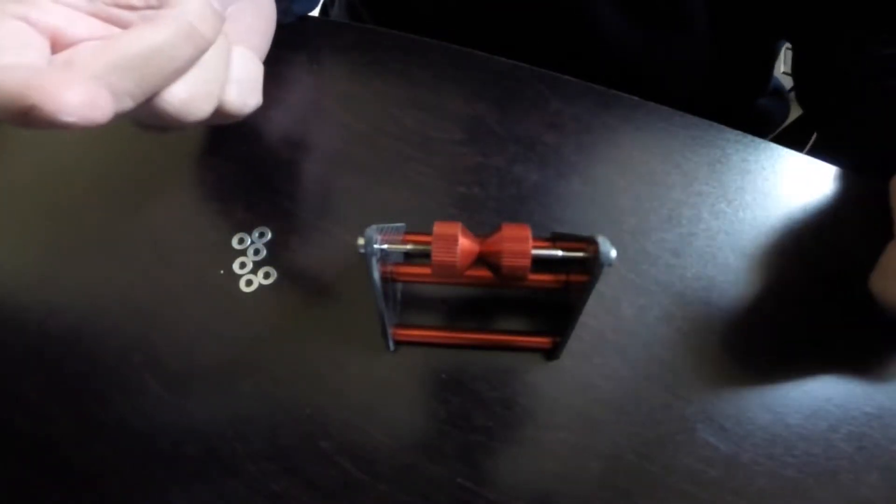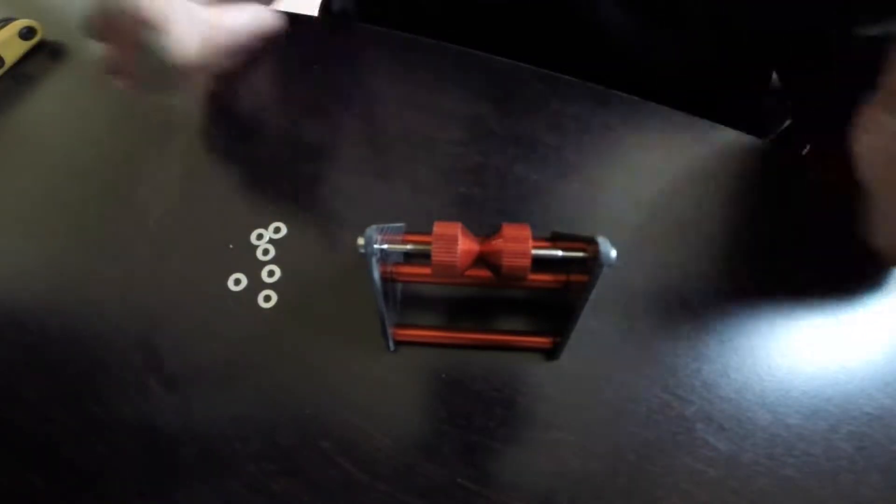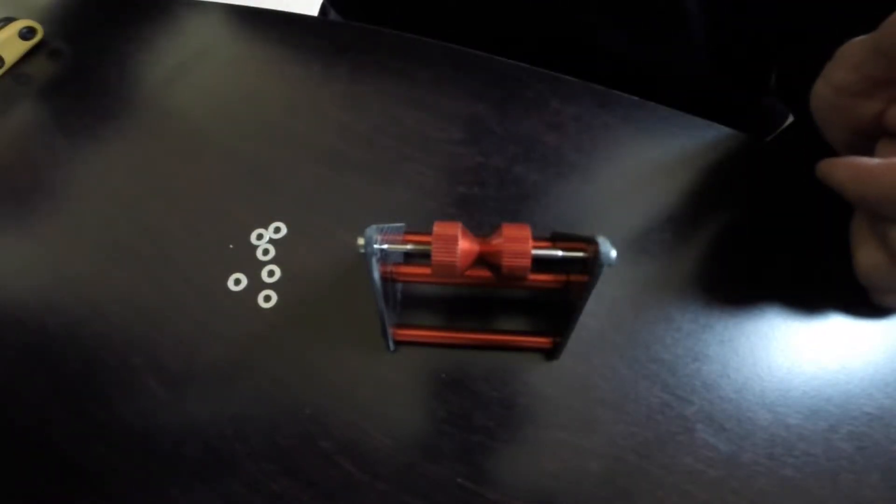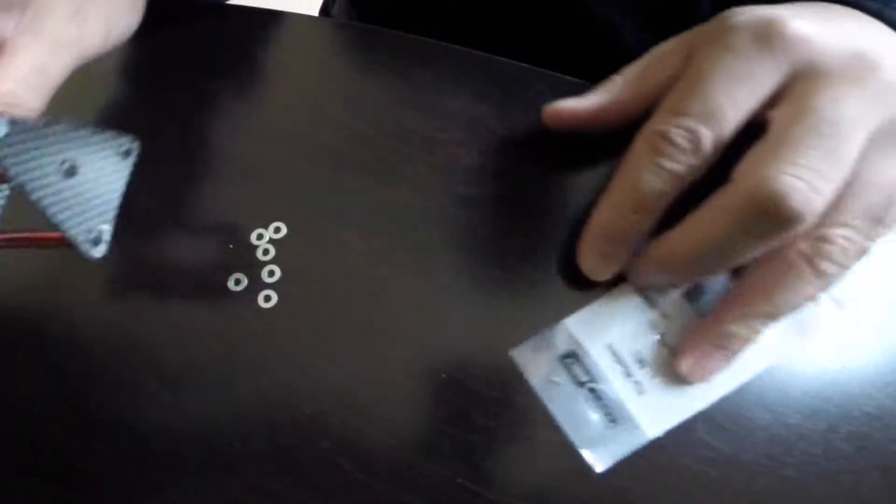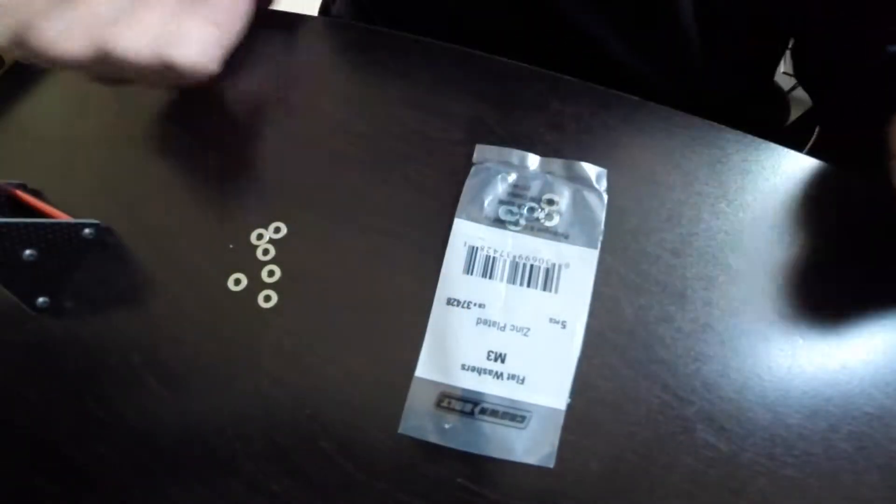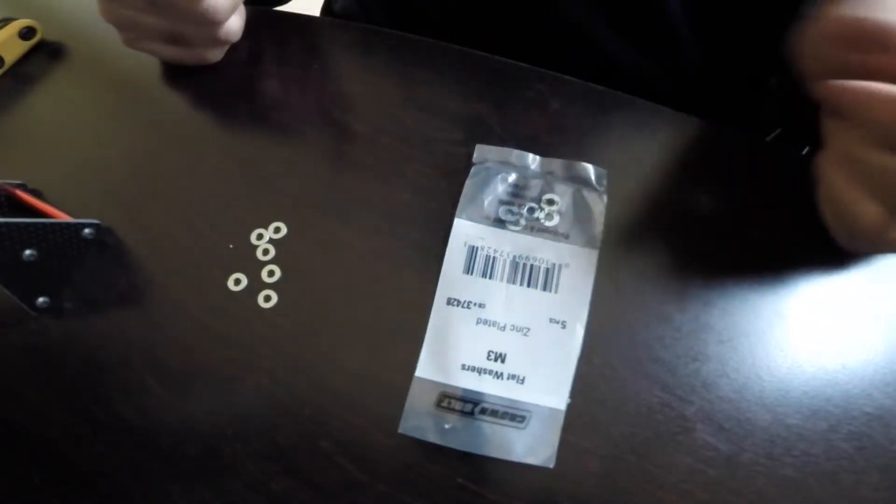So what I did to solve this problem was I went ahead and I bought some spacers and I put them on the inside of the tubes. The kind of spacers I bought was flat washers, m3 zinc plated. I got this at my local hardware store, I bought this at Orchard.